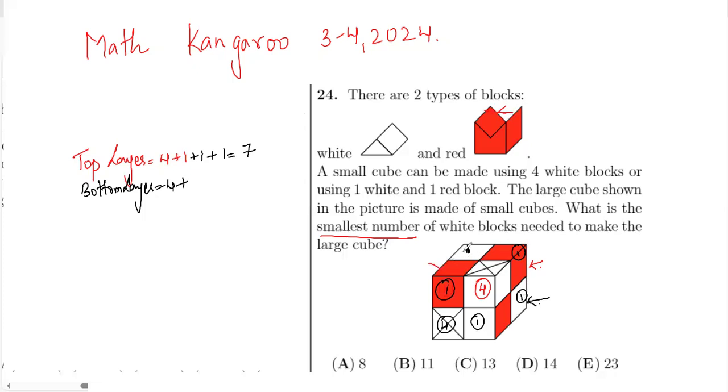And below this cube, we assume that this will be the same structure, and there will be one white and one red block. Because we are talking about the smallest number—if they were talking about the largest number, then we would take the block below this to be four white, but they're talking about the smallest number. So that becomes seven.